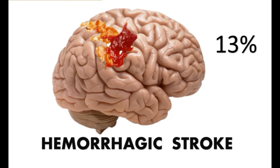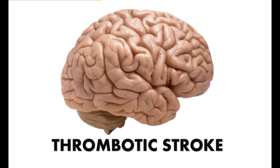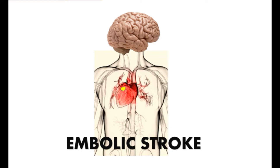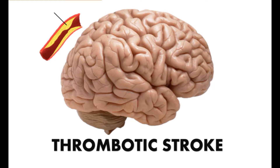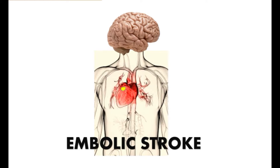Hemorrhagic strokes have a very high mortality rate and these patients do not do well. The second type of stroke is a thrombus that forms within the cerebral artery — we call this a thrombotic stroke. This is where the clot is lodged exactly where it was formed. The third is the embolic stroke, where a piece of that thrombus breaks off and goes in transit.